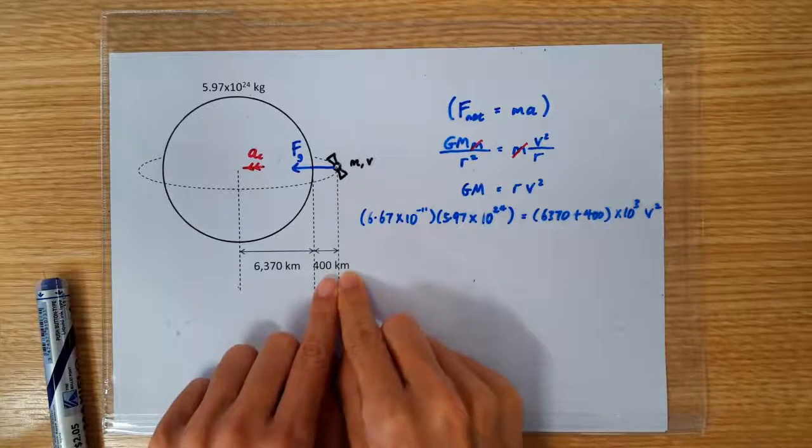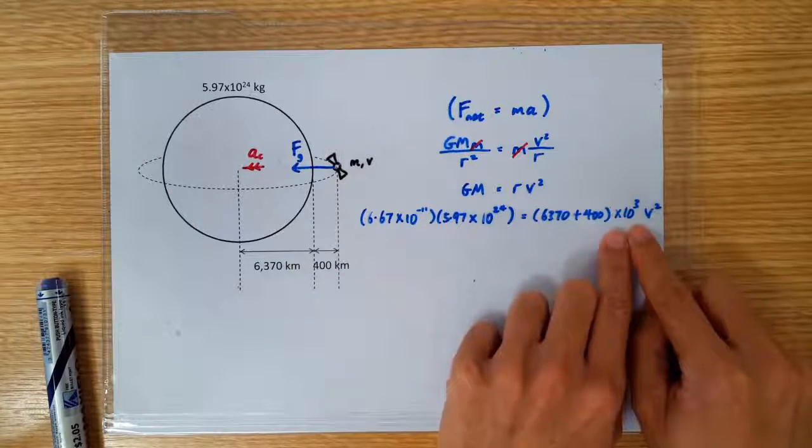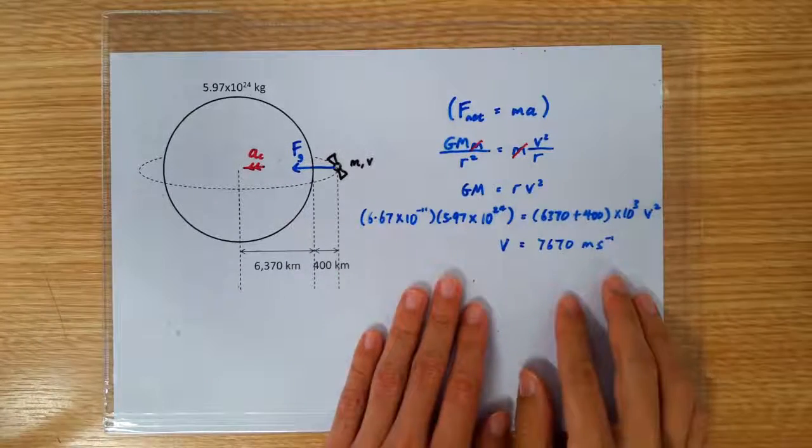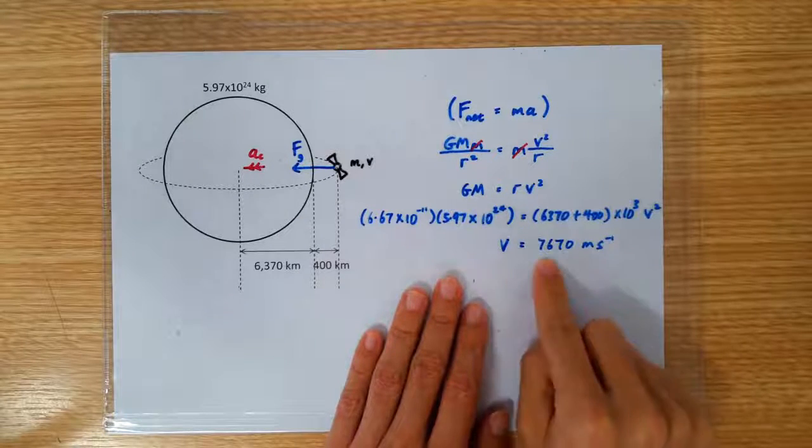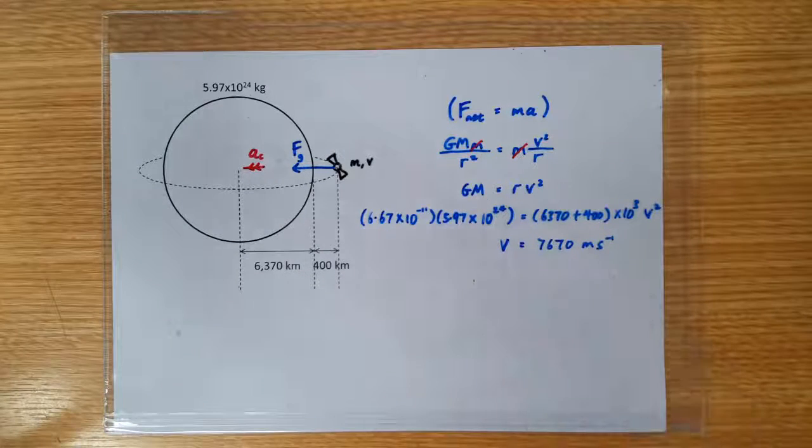Remember, this is in kilometers, so we got to convert it to meters. Press the calculator, and you get the orbital speed, which is almost 8000 meters per second.